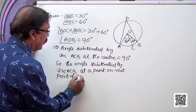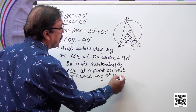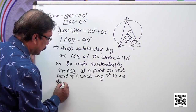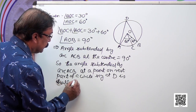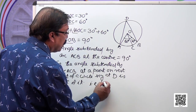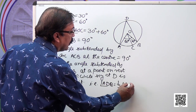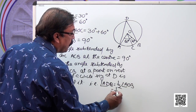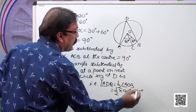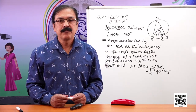The angle subtended by arc AB at D on the remaining part of the circle is half of it. That is, angle ADB is equal to half of angle AOB, which is half of 90 degrees, equal to 45 degrees. So, the measurement of angle ADB is 45 degrees.